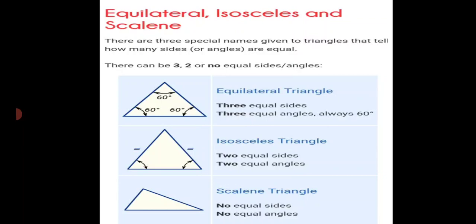The sum of angles in a triangle is always 180 degrees. An isosceles triangle has two equal sides and two equal angles. A scalene triangle has no equal sides and no equal angles. To repeat: equilateral triangle — three sides and three angles are equal; isosceles triangle — two sides and two angles are equal; scalene — no equal sides and no equal angles.